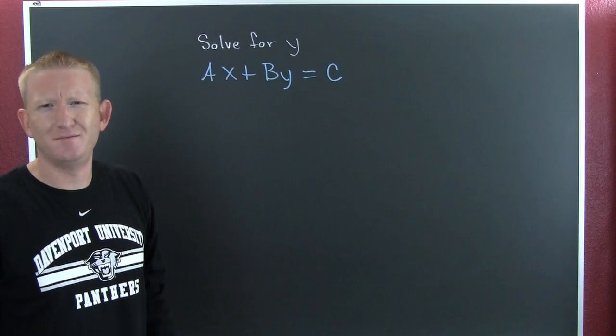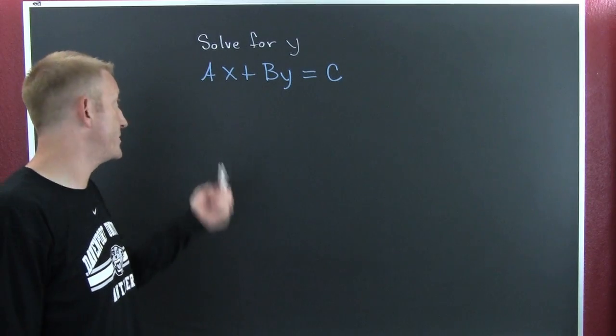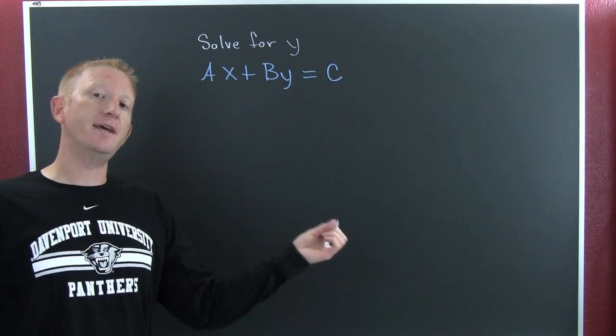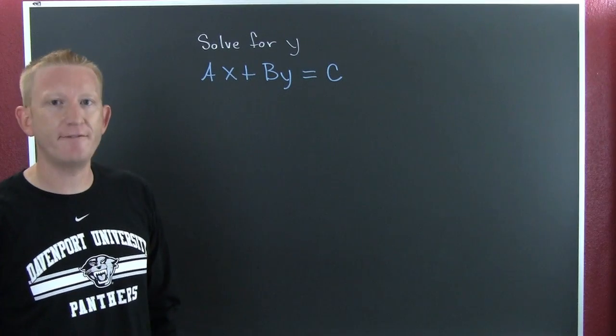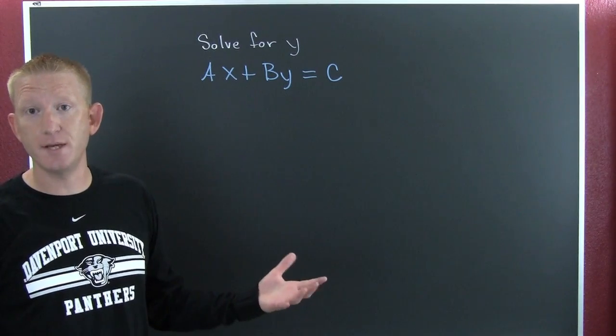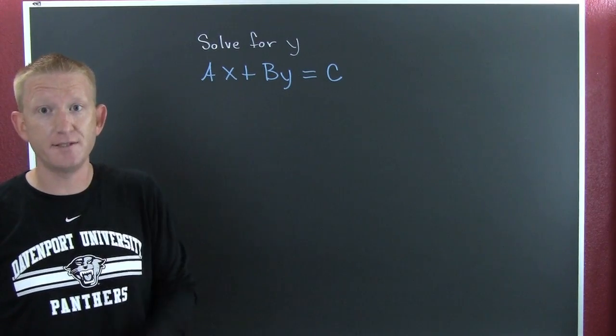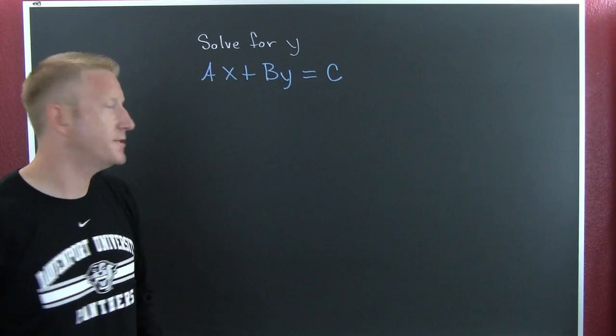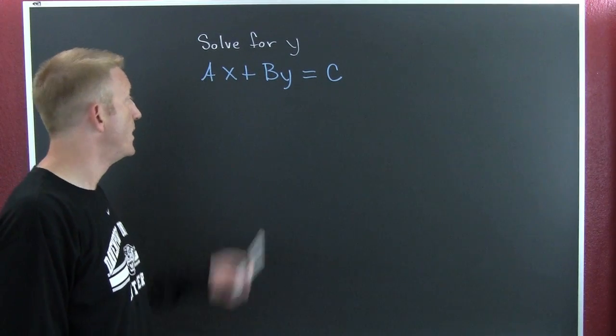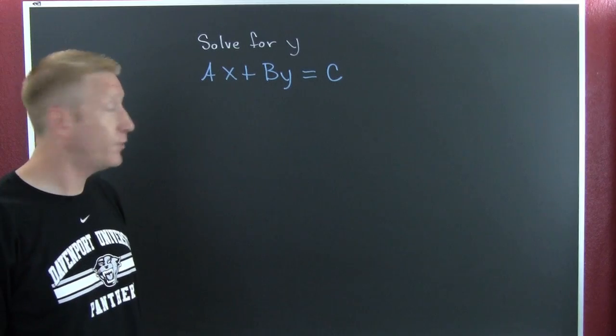We're trying to solve for y. Why? Well, this particular guy has implications and interest when you get to graphing lines. You can put it into y equals mx plus b. That's not the way we're doing here. We're trying to solve for the indicated variable. They have indicated that they want us to solve for y, and we will.